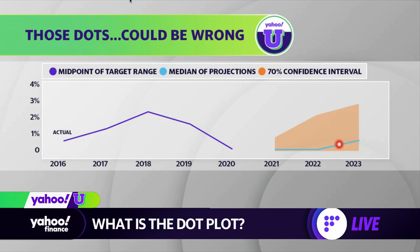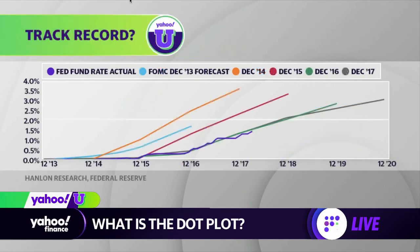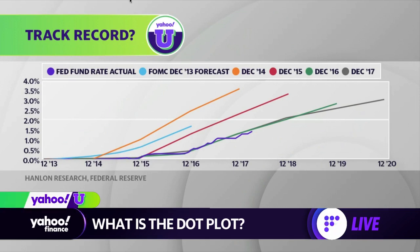The orange shading shows the uncertainty around this forecast. The Fed looks at errors in forecasts for interest rates made over the previous 20 years and draws a 70% confidence interval for its current forecast, which means these forecasts not only have a risk of being off, but they have a history of being off. And this is the track record of the dot plot.